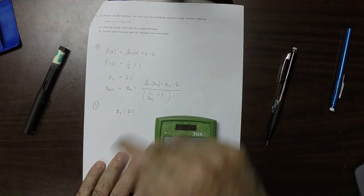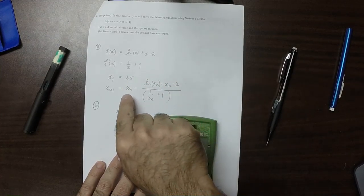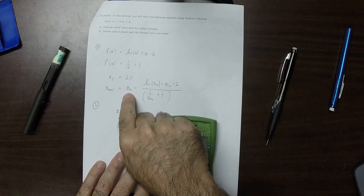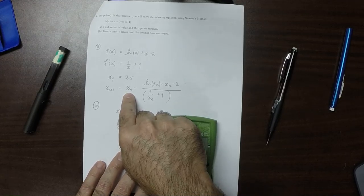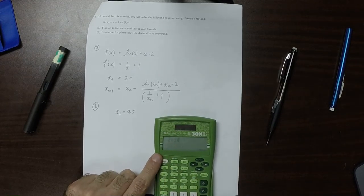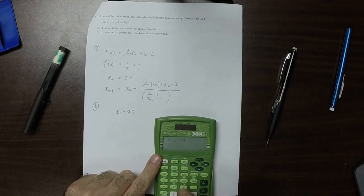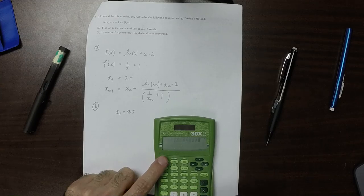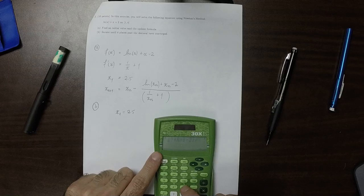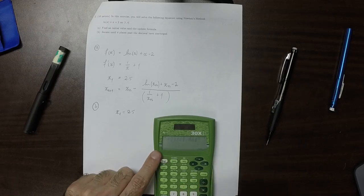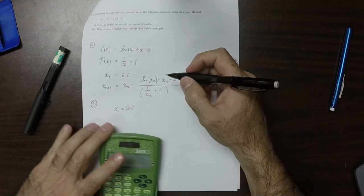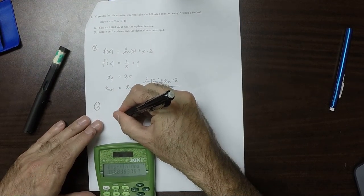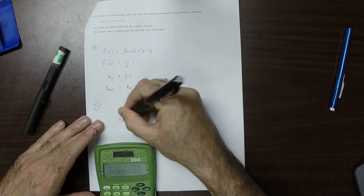Now I'll type this expression, the update formula, and for xn, I'll type ands in my calculator. So that would be ands minus log of ands plus ands minus 2 divided by 1 over ands plus 1. So that means that the next one, x2,